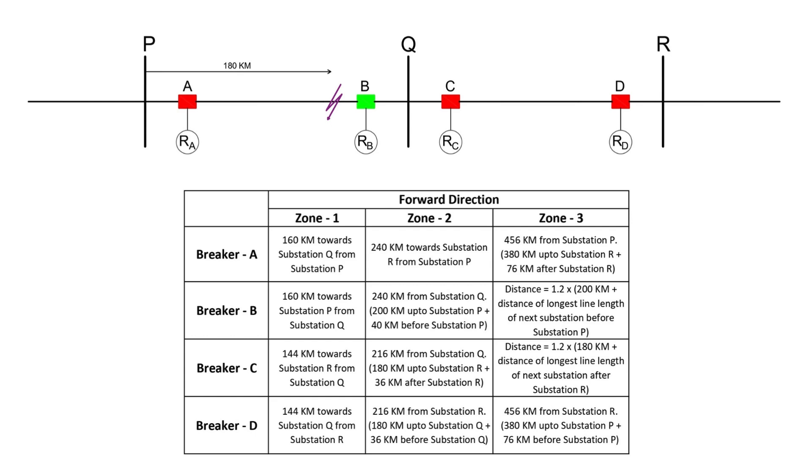If breaker B opens, the line will still be connected to substation P, meaning breaker A must trip too to fully isolate the fault. In this scenario, substation Q sends a direct trip signal to breaker A to ensure it trips immediately. If the direct trip signal fails, zone 2 protection of breaker A will activate as backup and trip the breaker after 350 milliseconds.